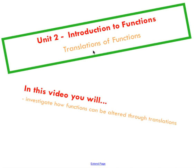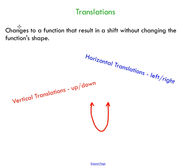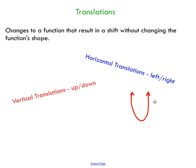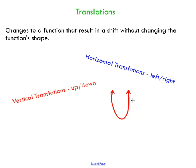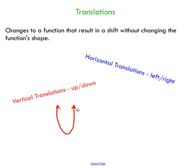Welcome to a video tutorial on translating functions. A translation is a change that you make to a function. For instance, if I make some sort of change to this parabola's equation, you could see that it ends up moving left or right — that's what we call horizontal translation. There's also a way we can move it up or down, and that's what we call vertical translation.